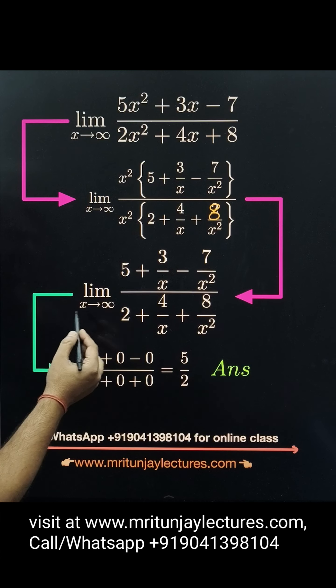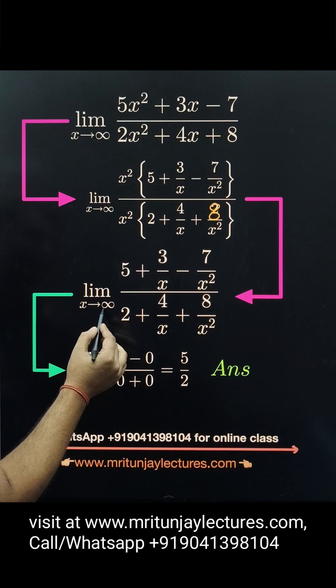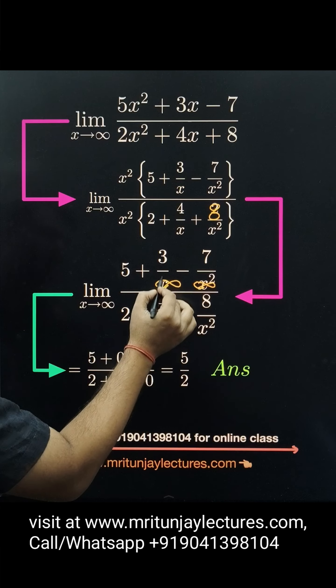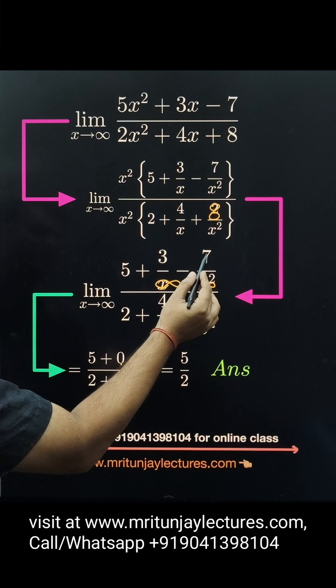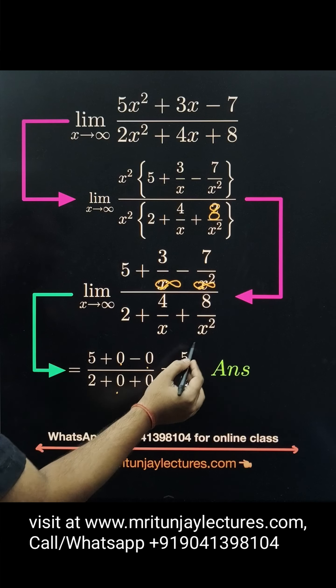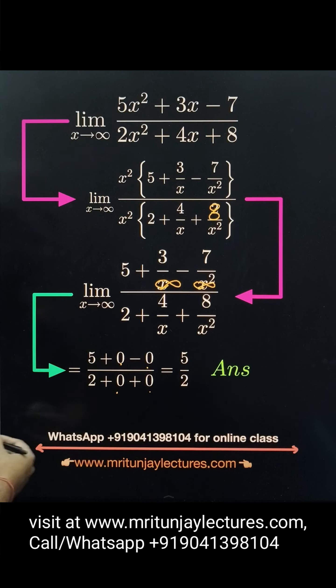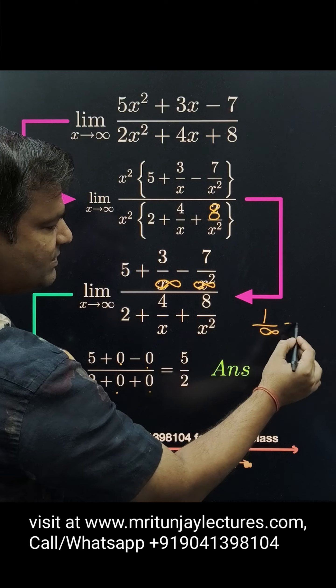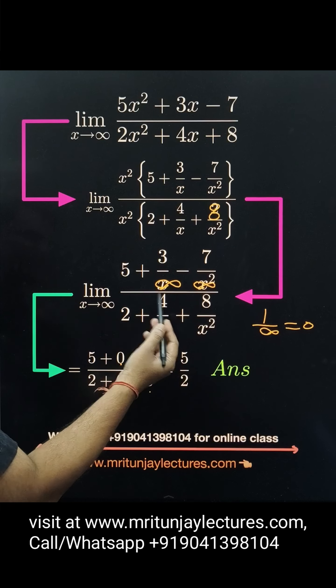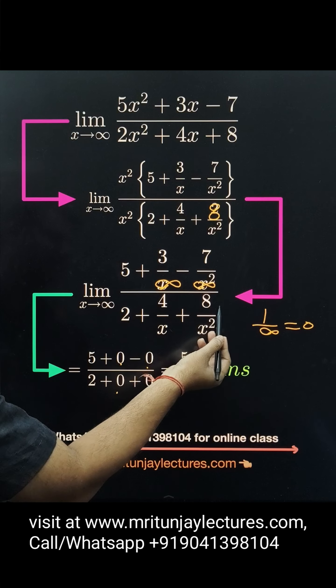Next, put x equal to infinity. 3 by infinity is 0, 7 by infinity is 0, 4 by infinity is 0, 8 by infinity is 0, because 1 by infinity is simply 0. So we get 5 by 2 as the right answer.